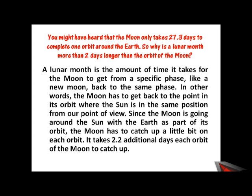There is an interesting fact: the moon only takes 27.3 days to complete one orbit around the earth, so why is the lunar month more than 2 days longer? Basically, the lunar month is the amount of time taken for the moon to get from one specific phase — the successive duration between two new moons. The moon has to get back to the point in its orbit where the sun is in the same position from our point of view, since the moon is going around the sun with the earth. The moon has to catch up a little bit each orbit, taking 2.2 additional days.